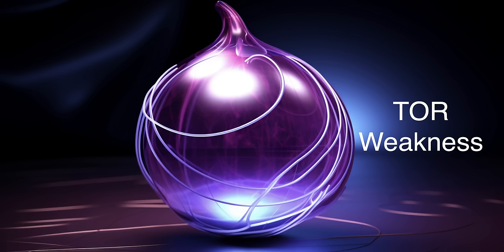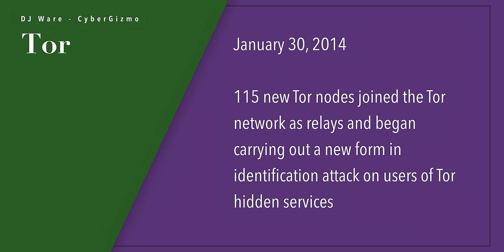There are weaknesses in Tor — there are weaknesses in all software. 115 new network nodes for Tor joined the Tor network as relays and began carrying out a new form of identification hack on users of Tor, particularly those accessing the hidden services inside of the Tor network. Yes, there are websites inside of the Tor network — those are the .onion addresses. There are search engines in there. There's all kinds of stuff in there, good and bad.